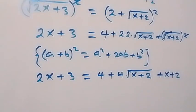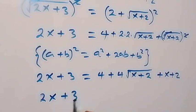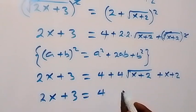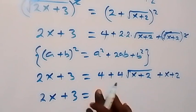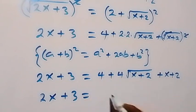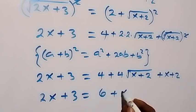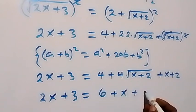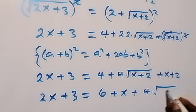Simplifying, we have 2x plus 3 equals to 4, plus 4 times square root of x plus 2, plus x plus 2. Collecting the constant terms: 4 plus 2 gives 6, so we have 2x plus 3 equals 6 plus x plus 4 times square root of x plus 2.